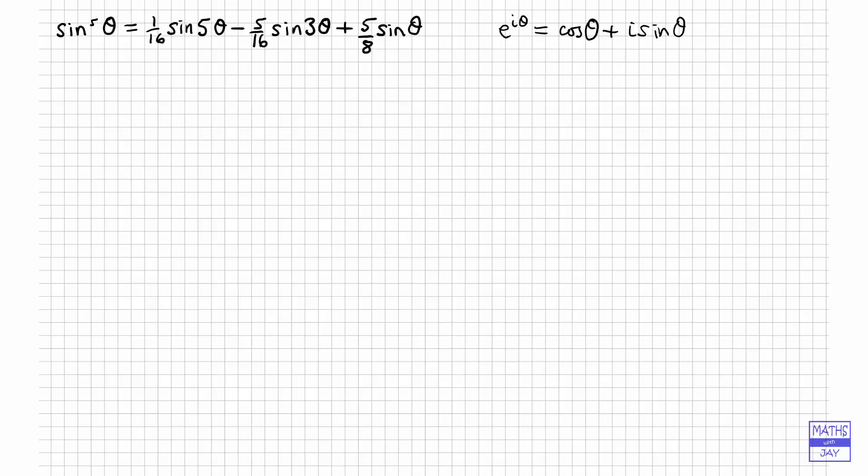So that's Euler's formula: e to the power of i theta is cos theta plus i sine theta.